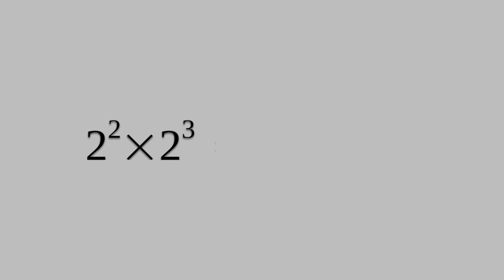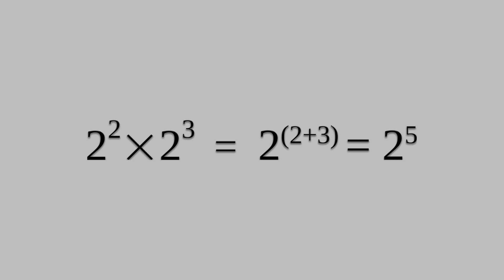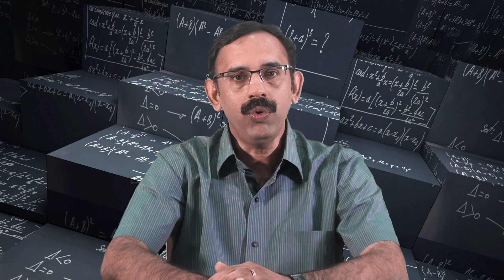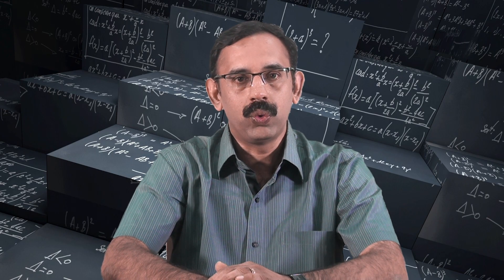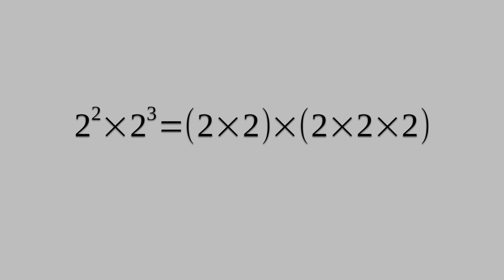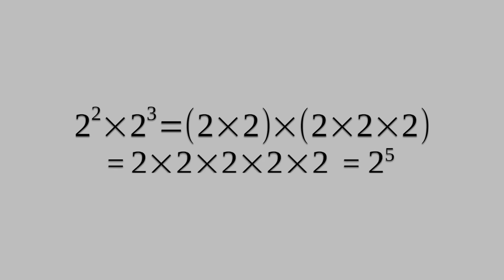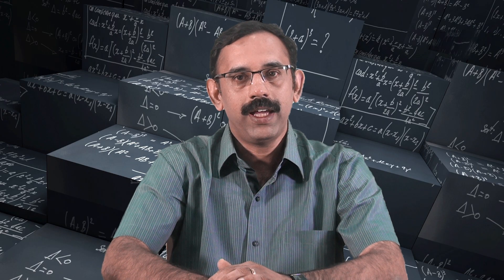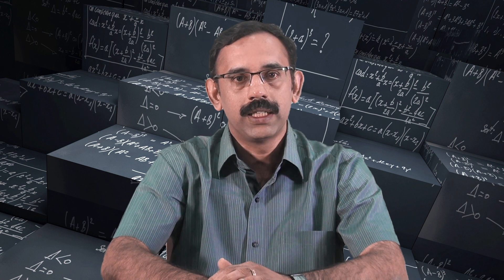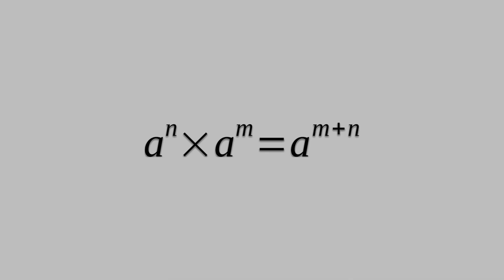How to find 2 raised to 2 times 2 raised to 3? It is 2 raised to 2 plus 3, which is equal to 2 raised to 5. How are we getting this? 2 raised to 2 times 2 raised to 3 is 2 times 2 times 2 times 2 times 2, which is 2 raised to 5. Hence, if n and m are positive integers and a is any non-zero number, a raised to n times a raised to m is equal to a raised to m plus n.